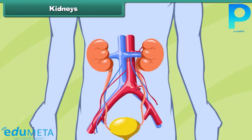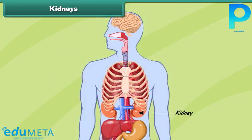The kidneys are organs that keep our blood free from unwanted substances called wastes. The human body has a pair of kidneys located just below the rib cage, one on either side of the body. The kidneys remove wastes from the blood and various body parts, and thus keep us healthy.